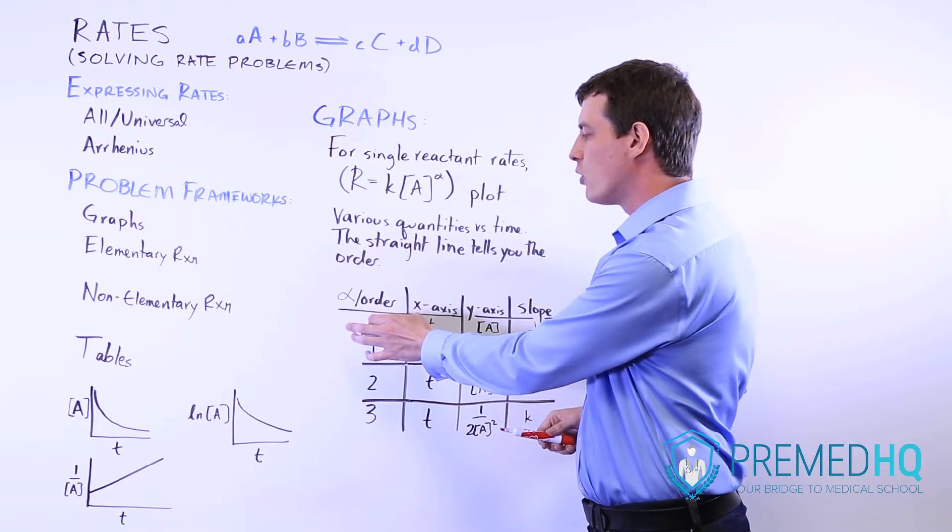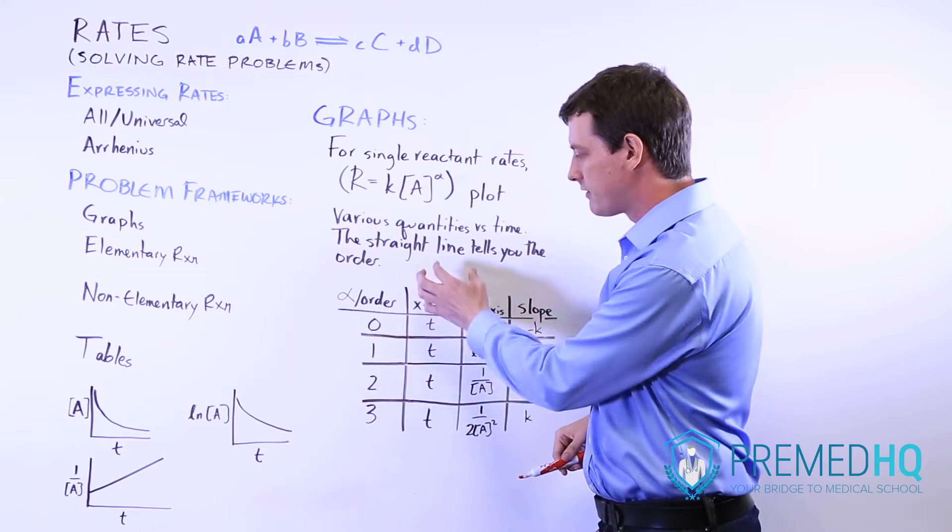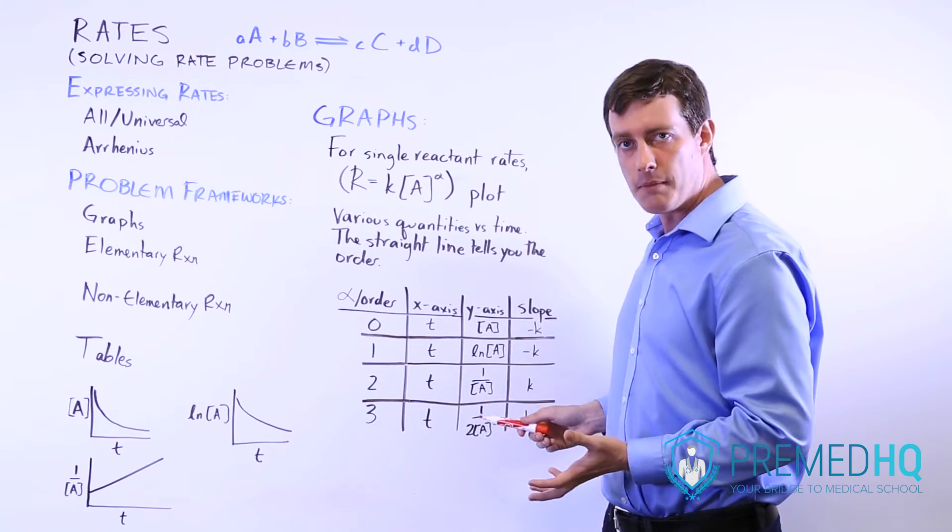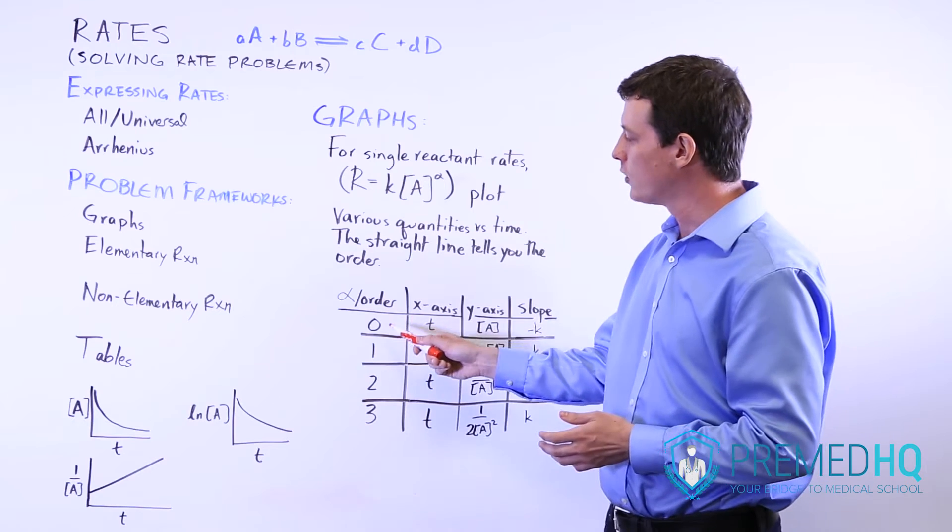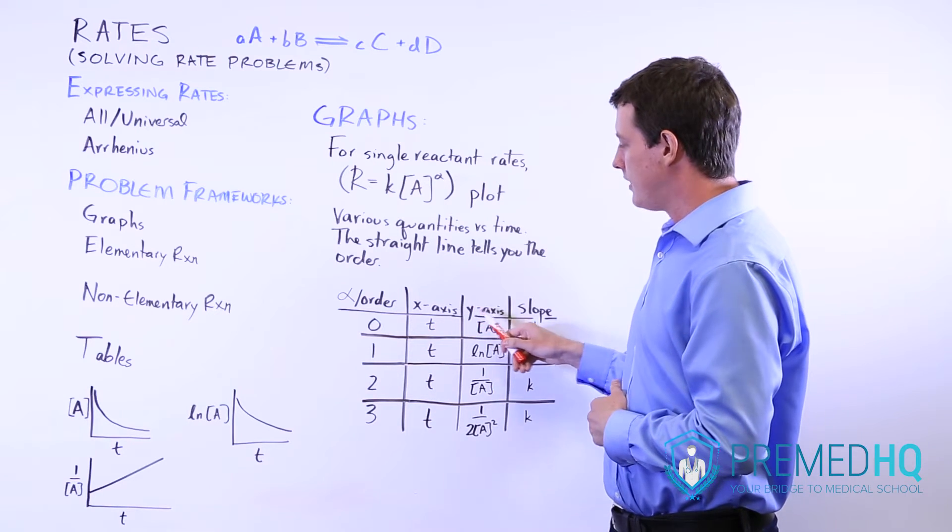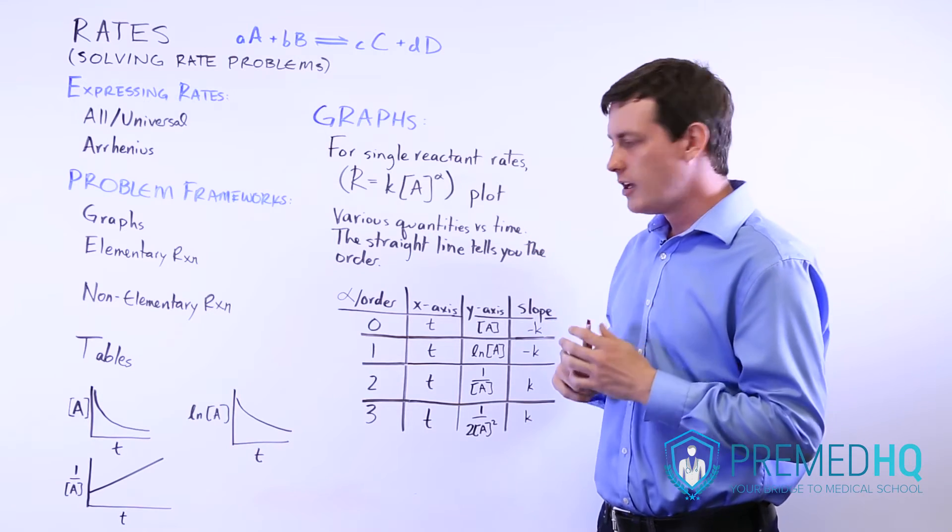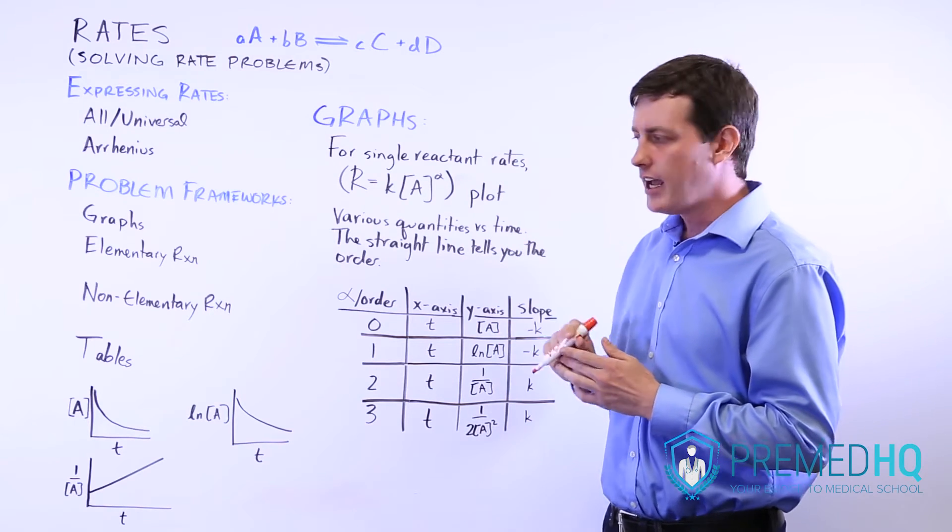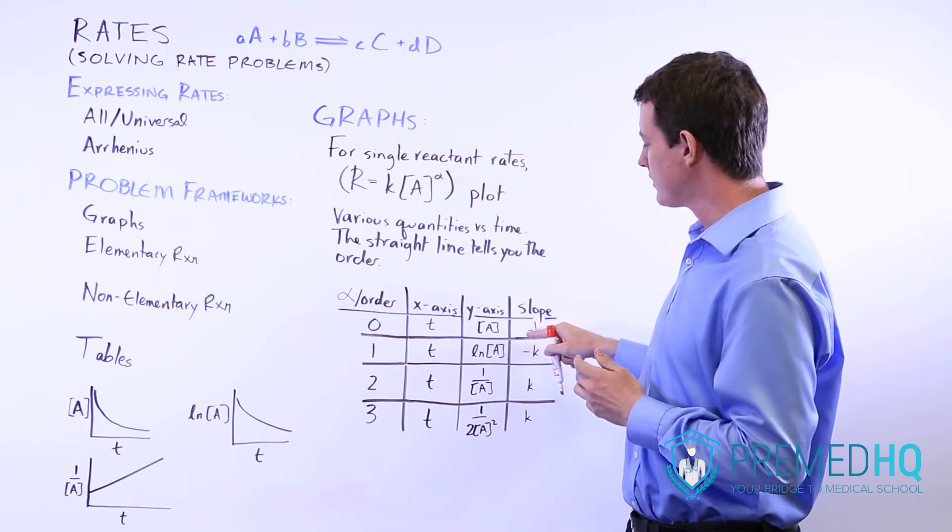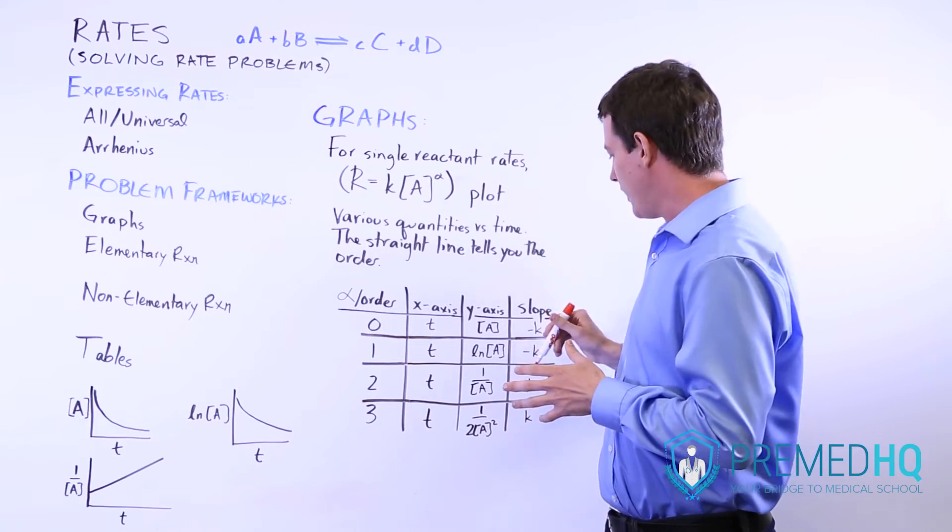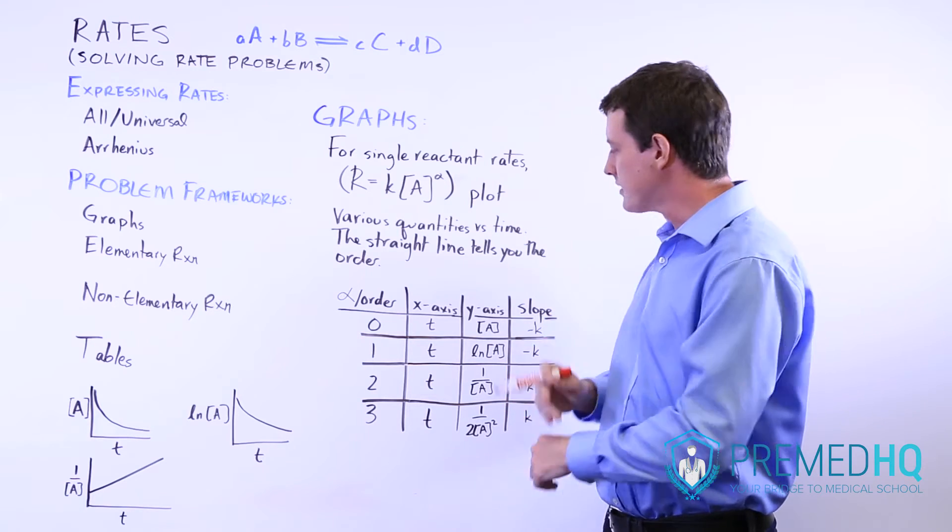So if it's a zero order reaction, just for all of these, notice that the x-axis is going to be time. But if it's zero order, what will happen is the y-axis with just the molarity of A will yield a straight line, and it will be slanting downward, so the slope will be negative k, where k is the forward reaction rate constant.